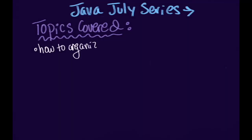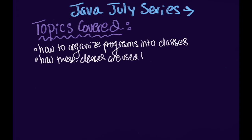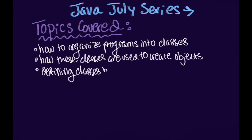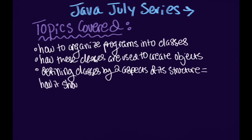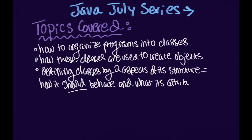In today's video, we learned how to organize programs into elements called classes, how these classes are used to create objects, and how to define and construct these classes by two aspects of its structure — how it should behave, and what its attributes are. Next week, we will look at how we can connect classes to each other in a way that one class inherits functionality from another class. Hope this helped!